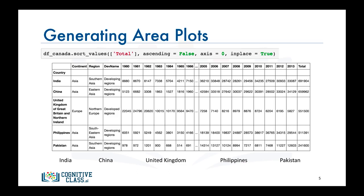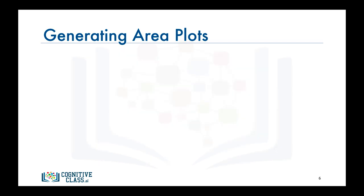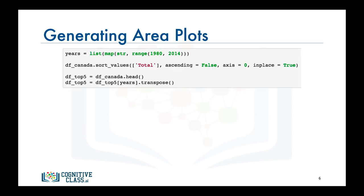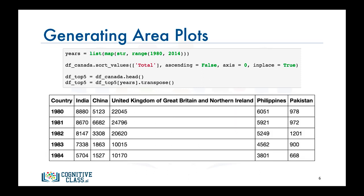After we sort our data frame in descending order of cumulative annual immigration, we create a new data frame of the top five countries and call it df_top5. We then select only the columns representing the years 1980 to 2013 in order to exclude the total column, before applying the transpose method. The resulting data frame is exactly what we want, with five columns where each column represents one of the top five countries and the years are the indices. Now we can go ahead and call the plot function on df_top5 to generate the area plots.